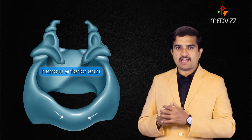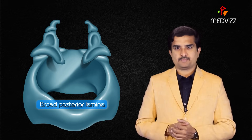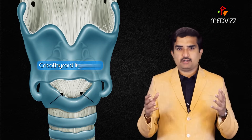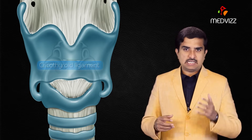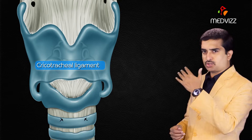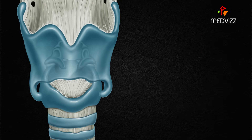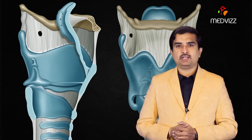The cricoid cartilage is composed of a narrow anterior arch and a broad posterior lamina. The arch connects the thyroid cartilage superiorly via the median cricothyroid ligament, and to the first tracheal ring inferiorly via the cricotracheal ligament.